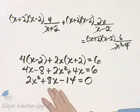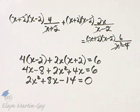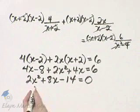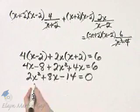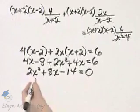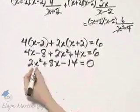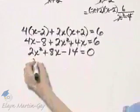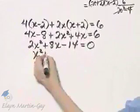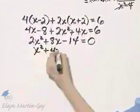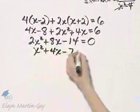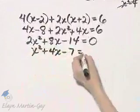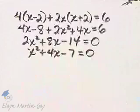Now notice each of these terms has a common factor of 2. So I'm going to take a step and divide through by 2. If you do not see this, you will still be okay when solving. But this will make my numbers smaller. So this term divided by 2 is x². This term divided by 2 is 4x. This term divided by 2 is 7. And this term divided by 2 is still 0.